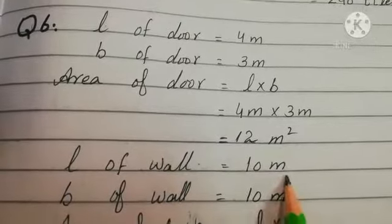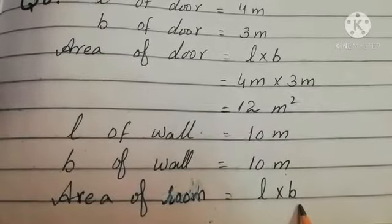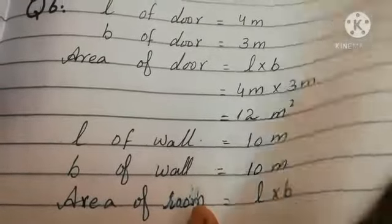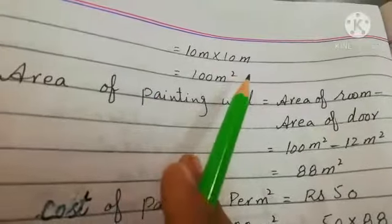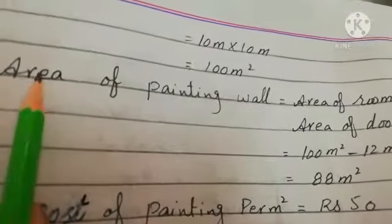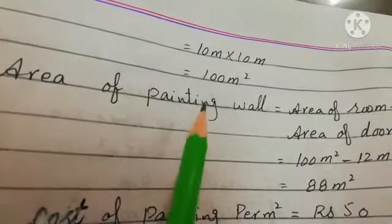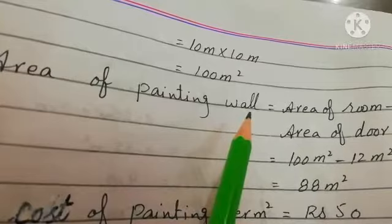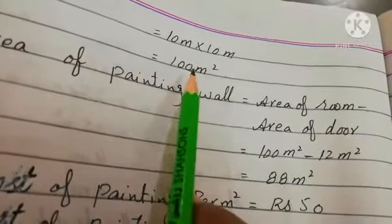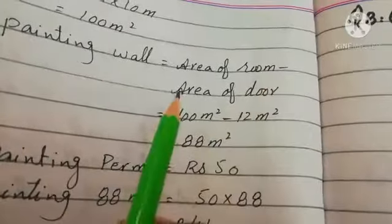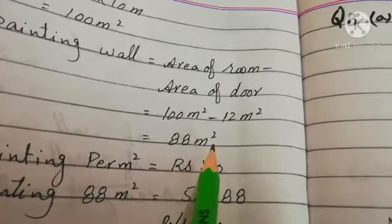Length of wall is equal to 10 meter. Area of room is equal to length multiplied by breadth, which is 10 meter multiplied by 10 meter, equal to 100 square meter. Area of painting wall equals area of room minus area of door: 100 meter square minus 12 meter square is equal to 88 meter square.